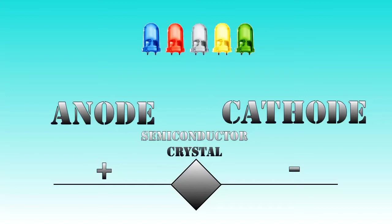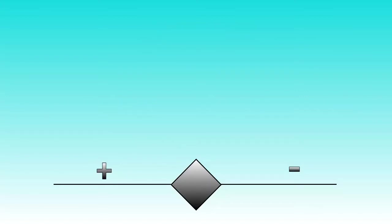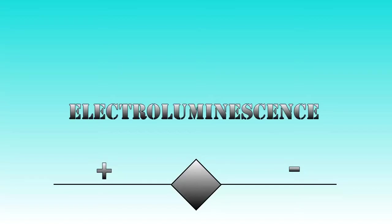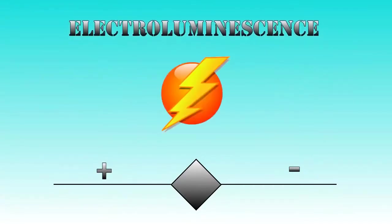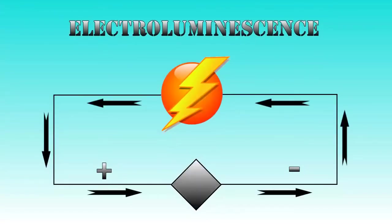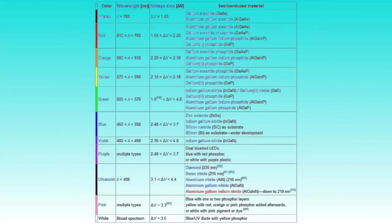The semiconductor crystal is what it's all about. LEDs work on the principle of electroluminescence, which is the ability of some materials to emit light when an electric current flows through them. Different semiconductor materials give different colors of course.